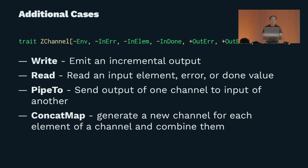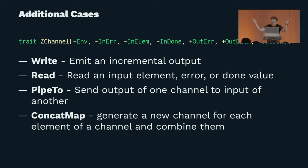And then we need 'concatMap' — I like to think of this as the flatMap of the out element. It lets us take each of the out elements from one channel, produce a new channel, and then put all those channels back together. Those are basically the only operators we need in addition to the operators on ZEO to describe a channel versus a ZEO that produces a single value.